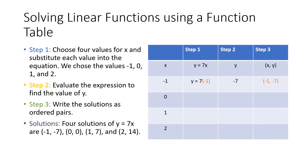Alright, so this table part is another way to get at this. We can use a table to solve linear functions. So if we have a linear equation like y equals 7x, we're simply going to choose some values. I've decided that we would choose four values — and we can choose any values, but it is useful to have usually a negative number, zero, and then two more numbers. So I've chosen negative 1, 0, 1, and 2, and notice they go here in our table.